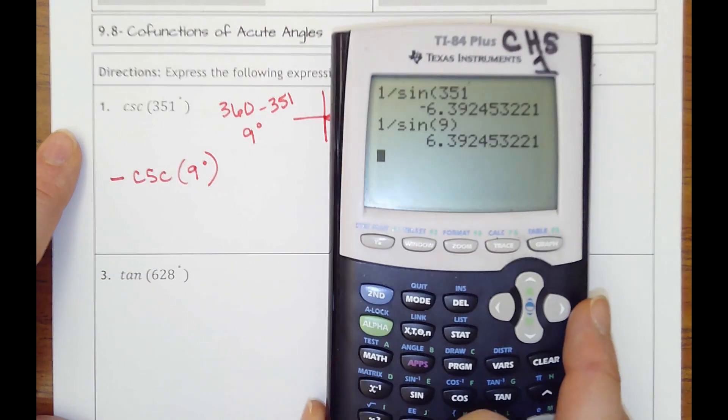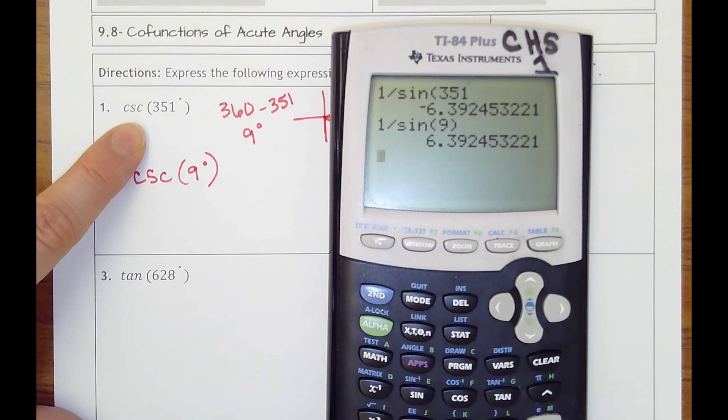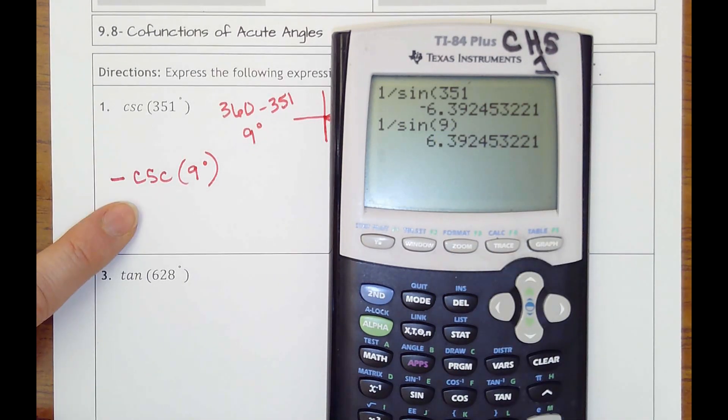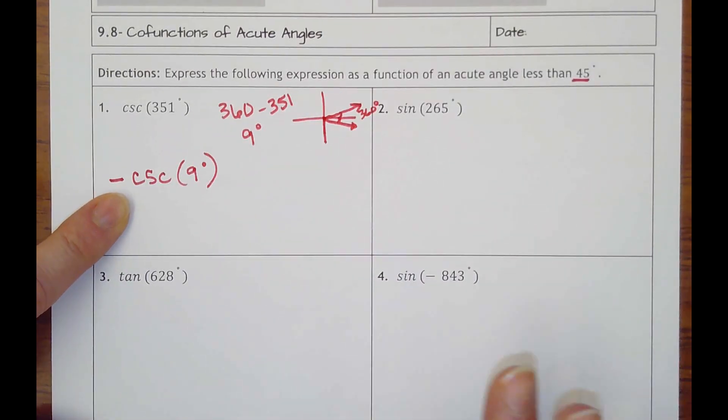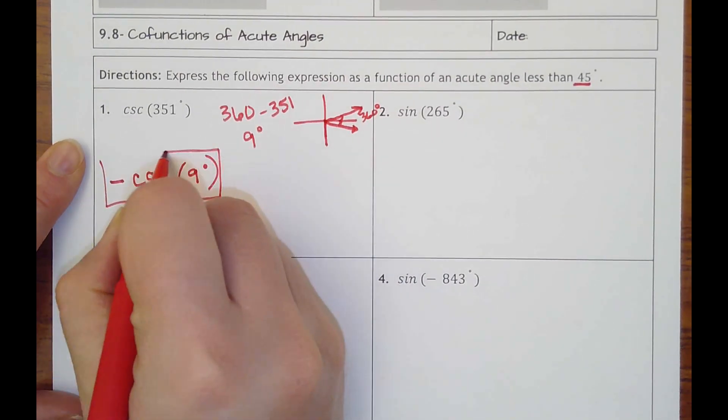So then I could try that if you didn't believe me that I already had this answer. So now if I did a negative 1 over sine of 9, I get that same negative 6 answer.